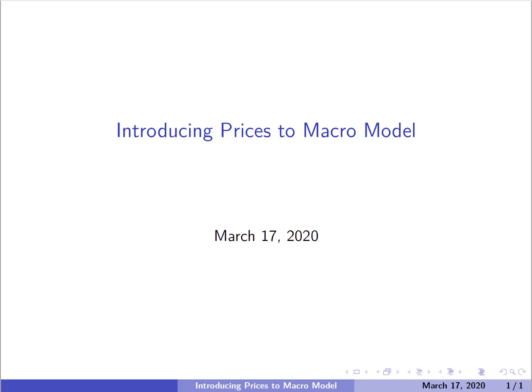In this series of videos we're going to be introducing prices and price levels to the simple macroeconomic model we've been working with. Last chapter we introduced government into our macroeconomic model through government purchases and taxation. We also introduced foreign trade in terms of exports and imports. And now we're going to introduce prices and start deriving the idea of an aggregate demand curve and an aggregate supply curve for the entire economy.